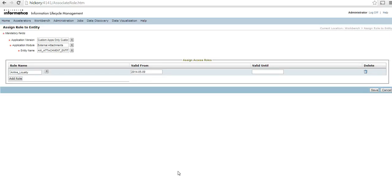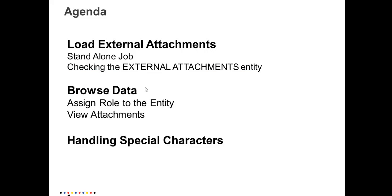See the attachments here. Whenever the attachment file has some special characters, I need to make sure that I handle these special characters so that when I download the attachment file from the data vault, I should be able to view it in the same format that it was available in the source data.